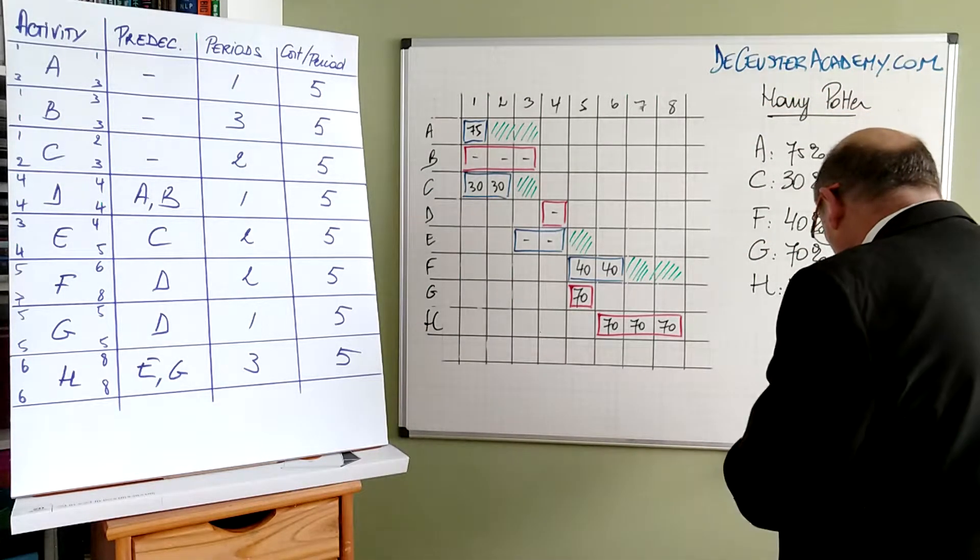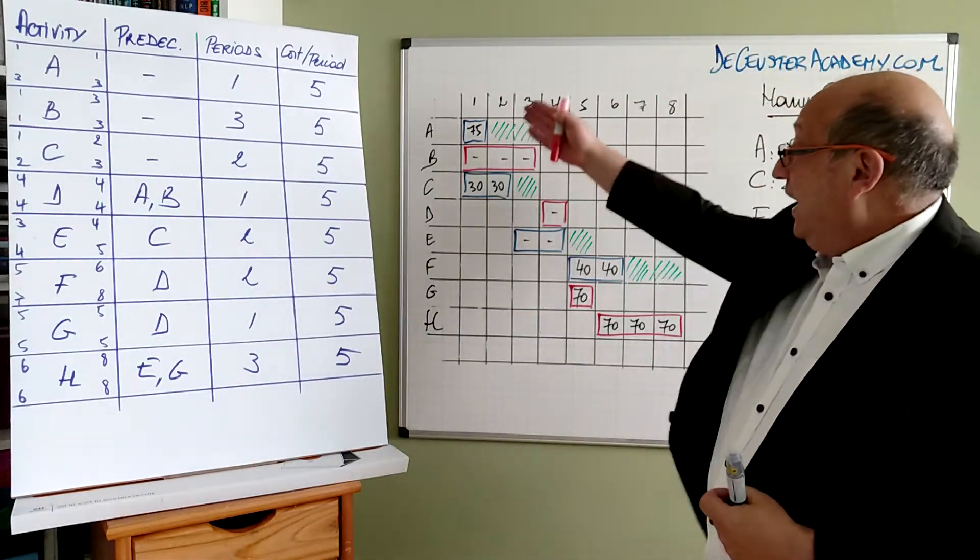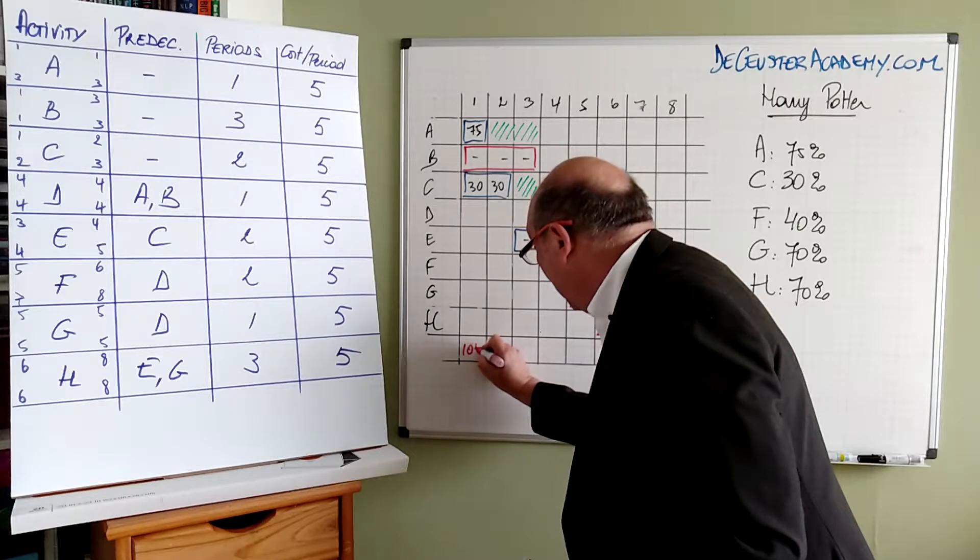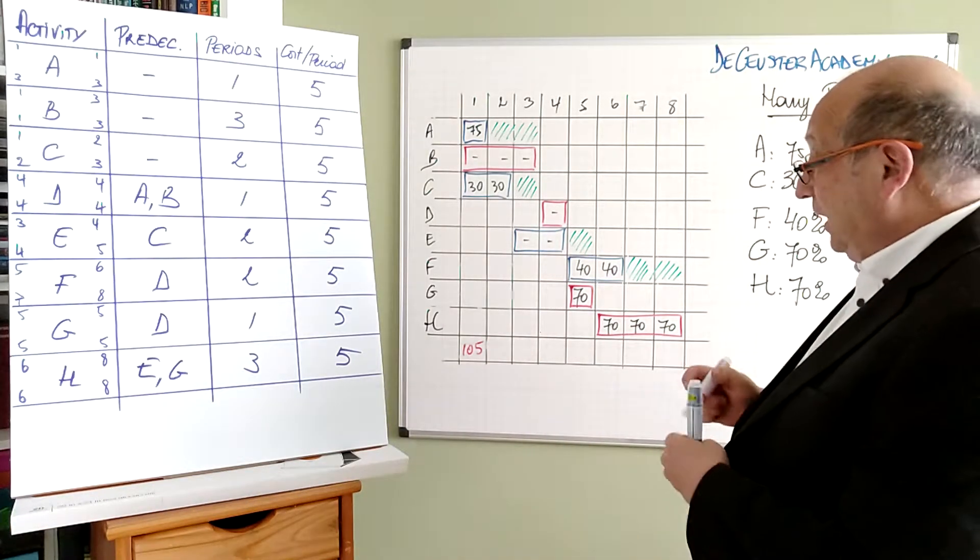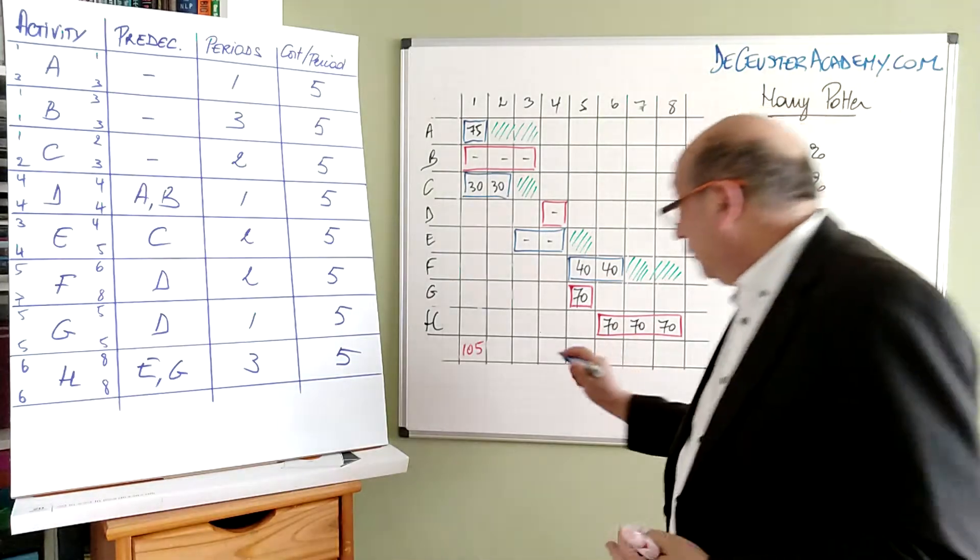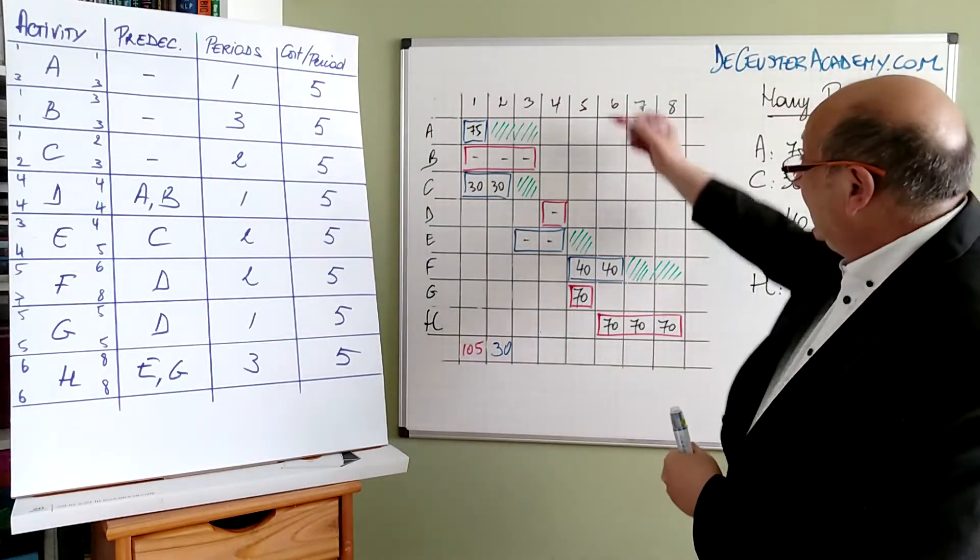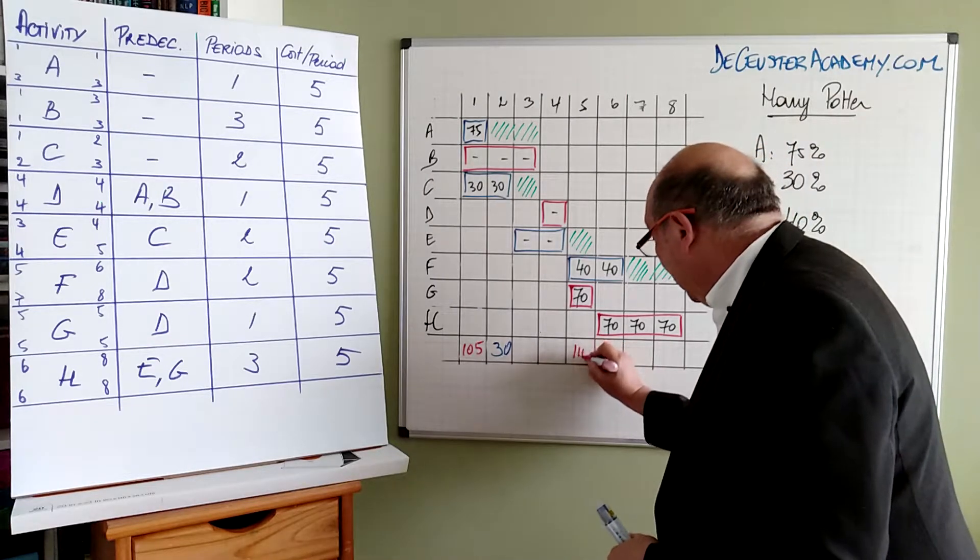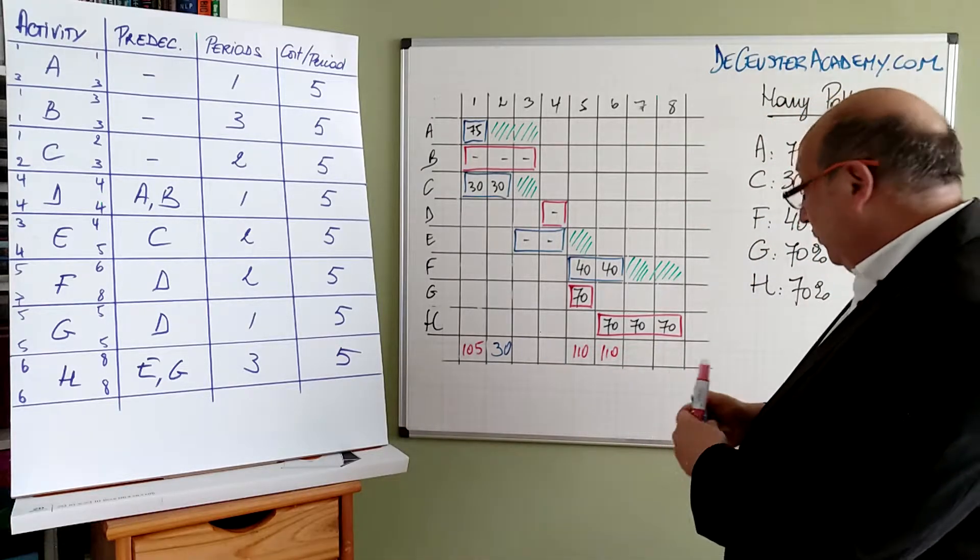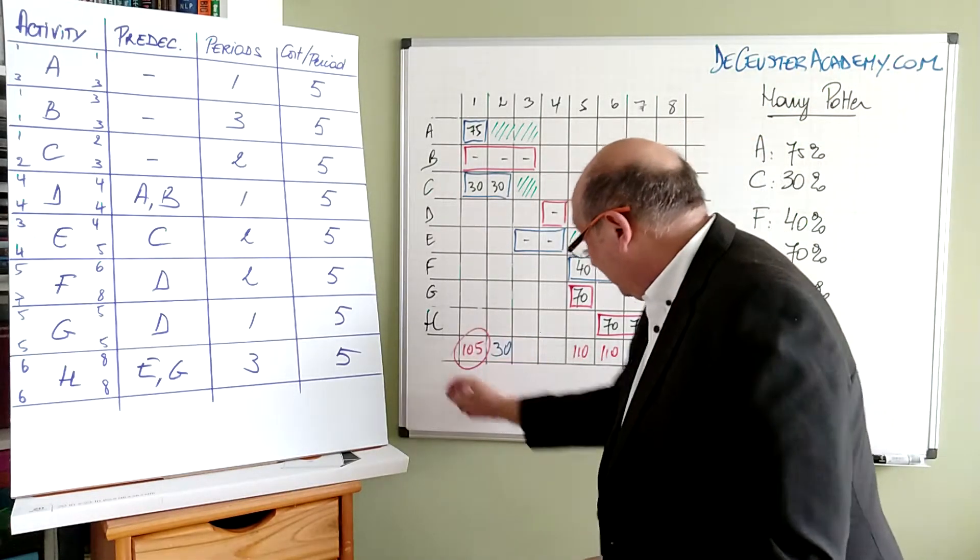Now what we have to do is to look at the different activities and we have to see what is the allocation of Harry Potter, for example, in the first period. And we see it's 105%, which is more than 100%, that's why I put it in red. The next period that Harry is working is period 2, but we only have 30%, which is okay, there is no problem. We continue and we see here again in period 5, we have 110%, here also 110% and here we have 70%. Now we have problems here and here.